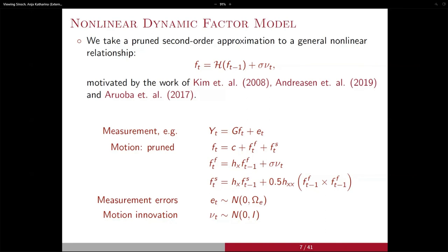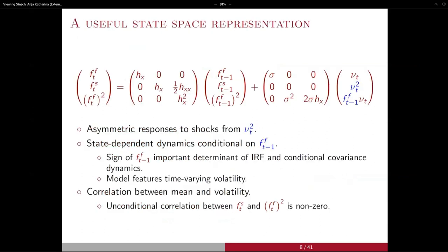We impose normality in the innovations to the system. The reason is that, as I showed you, the composition of our system is already quite rich, so we don't want to blur the model's richness with additional non-linearity elements like time-varying parameters or stochastic volatility — though nothing prevents you from doing that. The model has this very nice state-space representation, and if you stare at it for a moment, you can immediately see some of its nice characteristics.